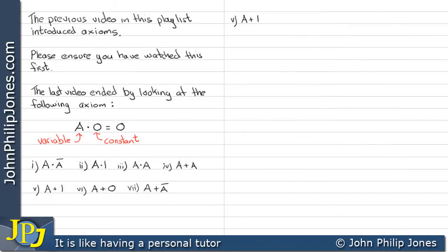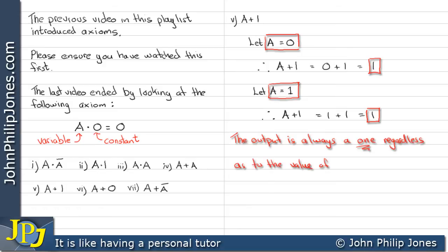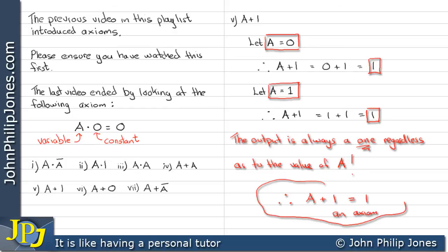Let's look at the next example: A OR one. Let A equal zero, therefore A OR one is zero OR one, which gives us a result of one. Let A equal one, therefore A OR one becomes one OR one, giving us a result of one. When A is zero the result is one, and when A is one the result is one. The output is always one regardless of the value of A. Therefore A OR one always gives a one, and this is another example of an axiom.